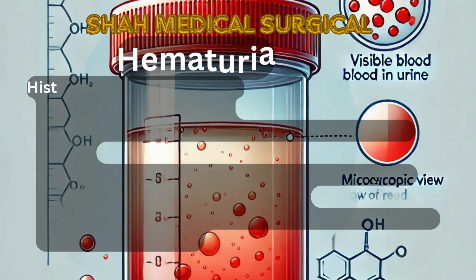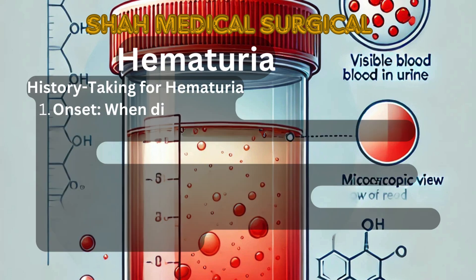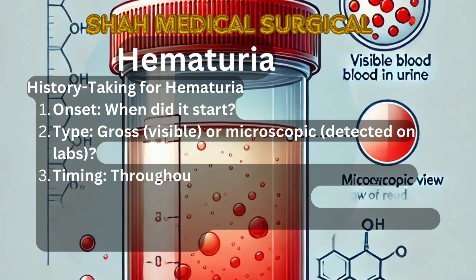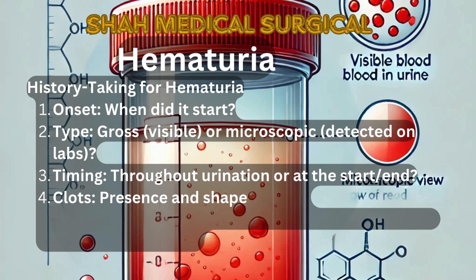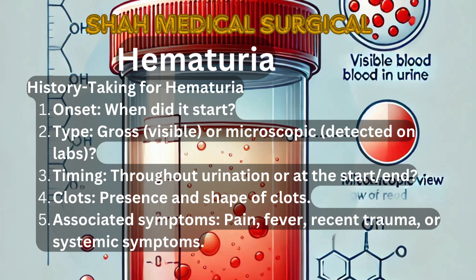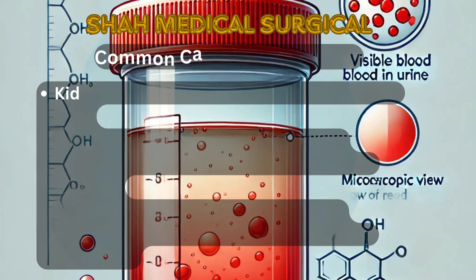Hematuria. History taking for hematuria involves these key questions: 1. Onset — when did the hematuria start? 2. Type — is the hematuria gross (visible) or microscopic (detected in labs)? 3. Timing — does the blood appear throughout urination, or only at the start or end? 4. Clots — are there any clots, and what is their shape? 5. Associated symptoms — is there pain, fever, recent trauma, or any systemic symptoms?